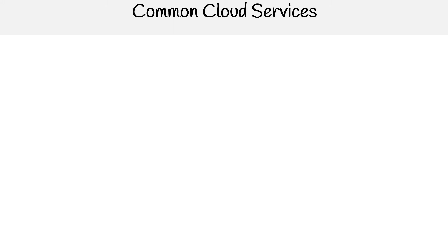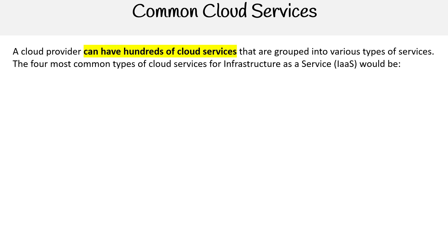This is Andrew Brown from ExamPro. We're going to take a quick look at the four main categories of cloud services that you'll find on a cloud service provider. A cloud provider can have hundreds of cloud services grouped into various types of services. The four most common types — I like to call these the four cores — and specifically for infrastructure as a service.